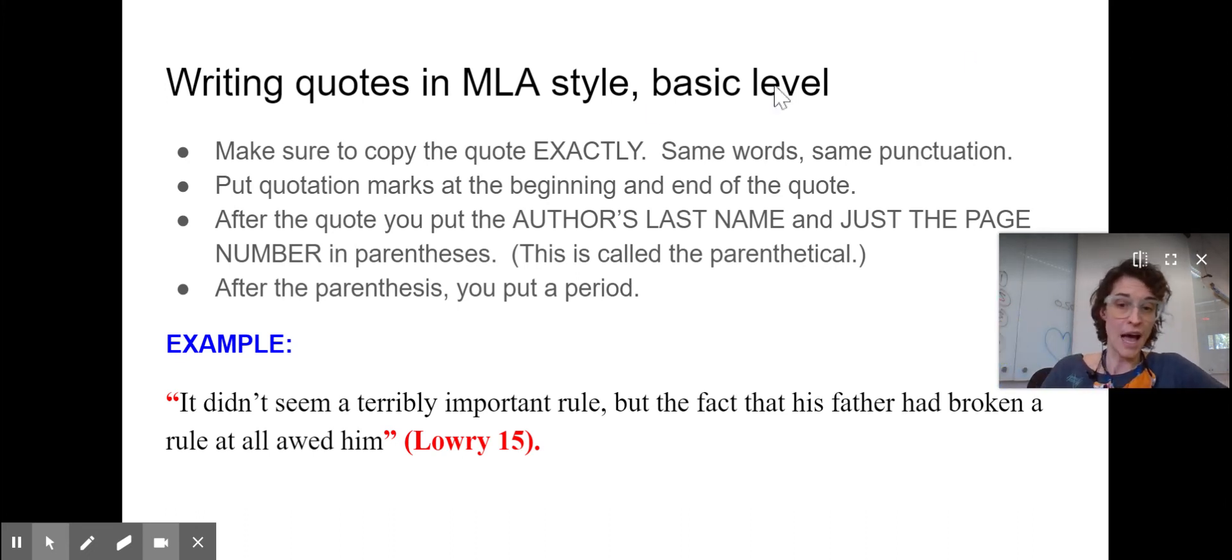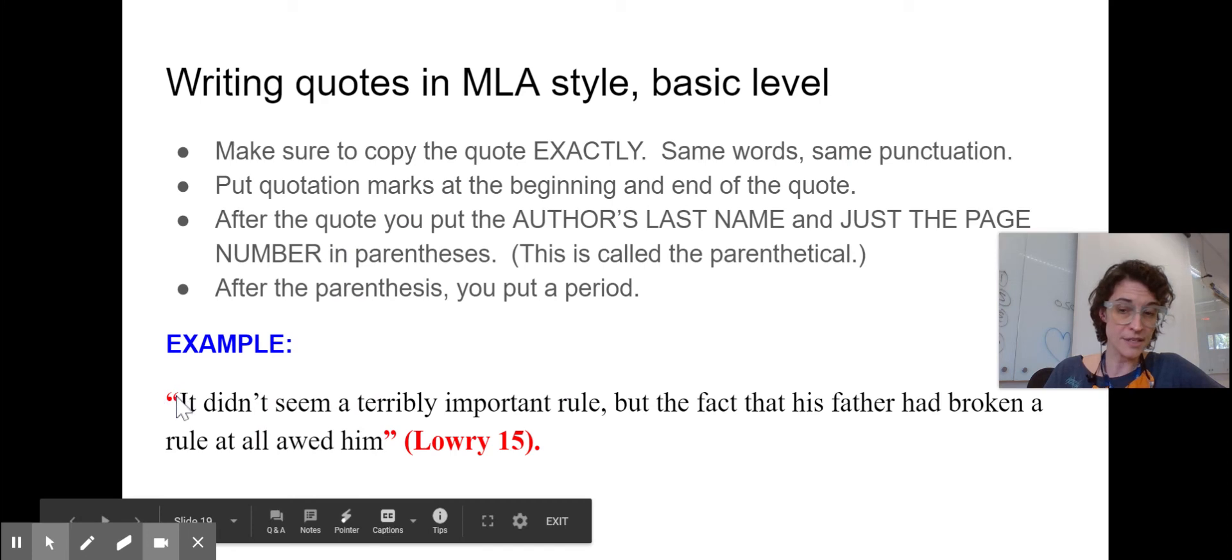So notice, I put quotation marks around the words that are not mine. Those are the words that I'm taking from the book to prove my point. Then after my last quotation mark, I add a parentheses, the author's last name, Lowry, and then the page number.